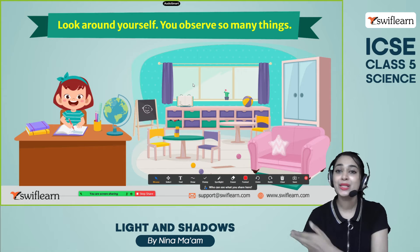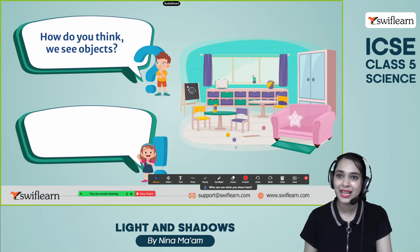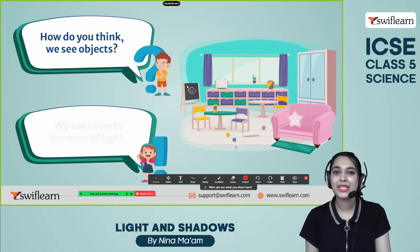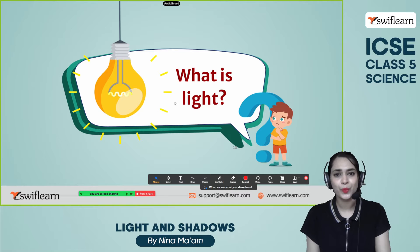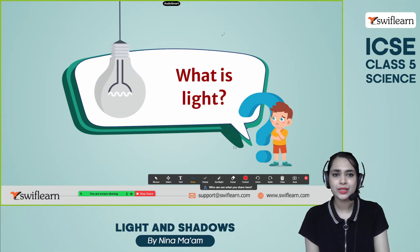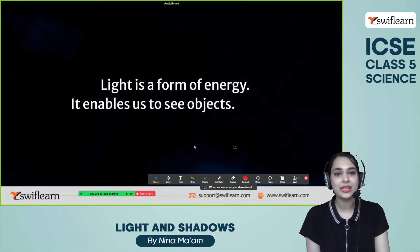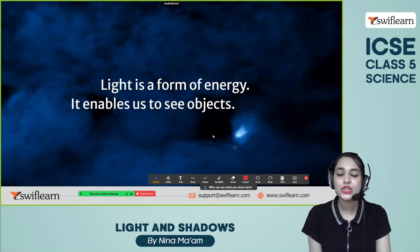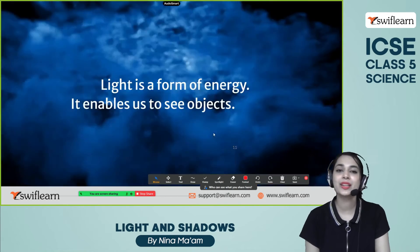Now open your eyes and look around yourself. You observe so many things, right? How is that possible? We see objects with the help of light. So the big question is: what is light? Light is a form of energy. It enables us to see the objects and things around us.